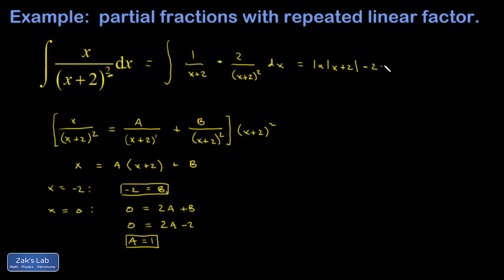Then minus 2 times the integral of 1/(x+2)². That's just (x+2)^(-2). When I integrate, I get (x+2)^(-1) divided by -1.